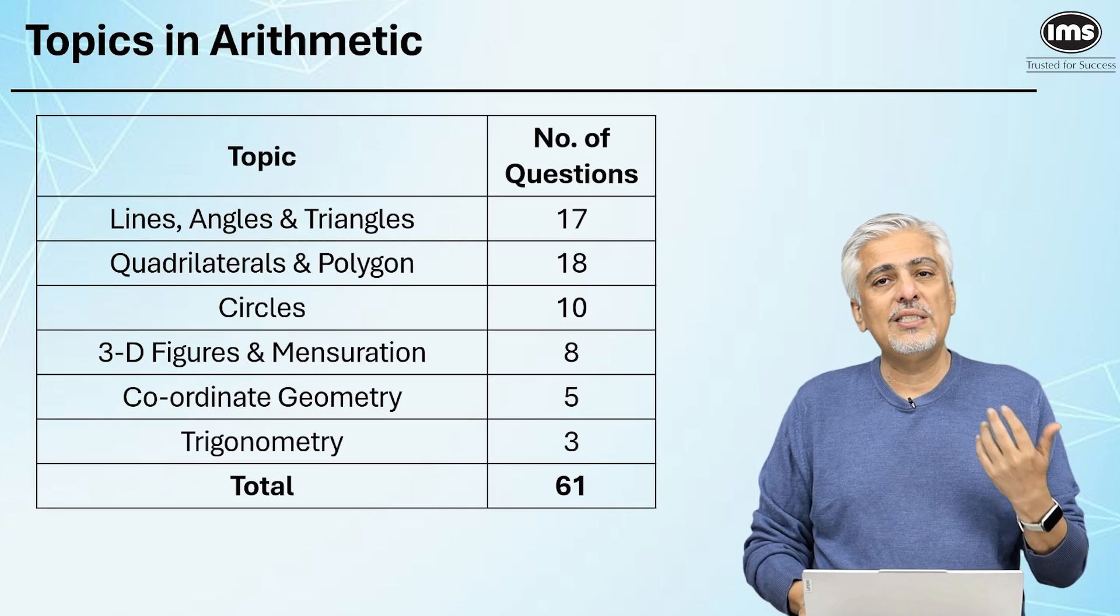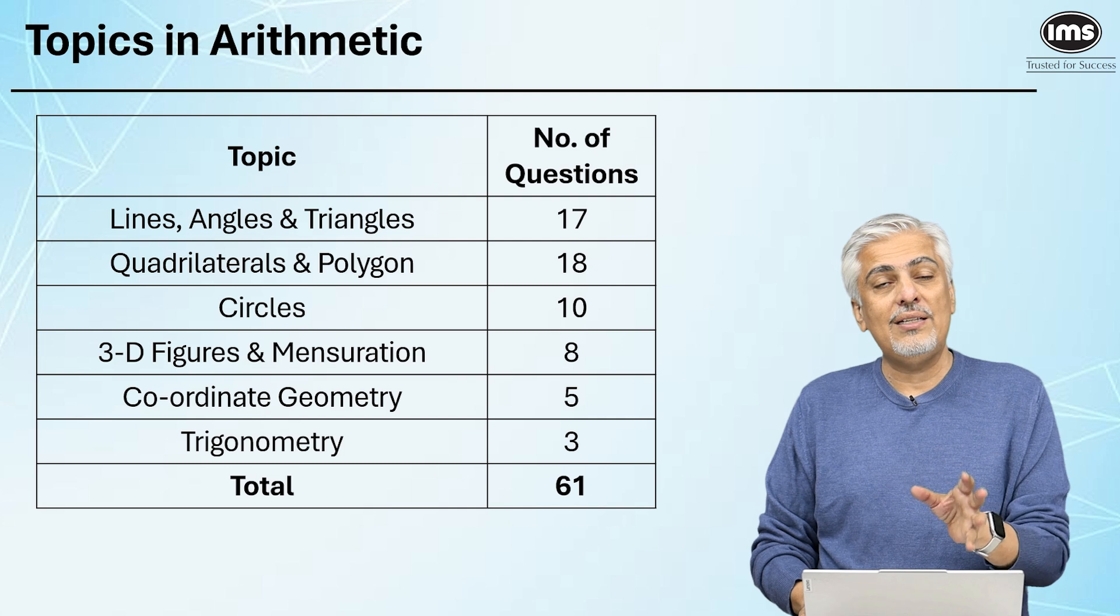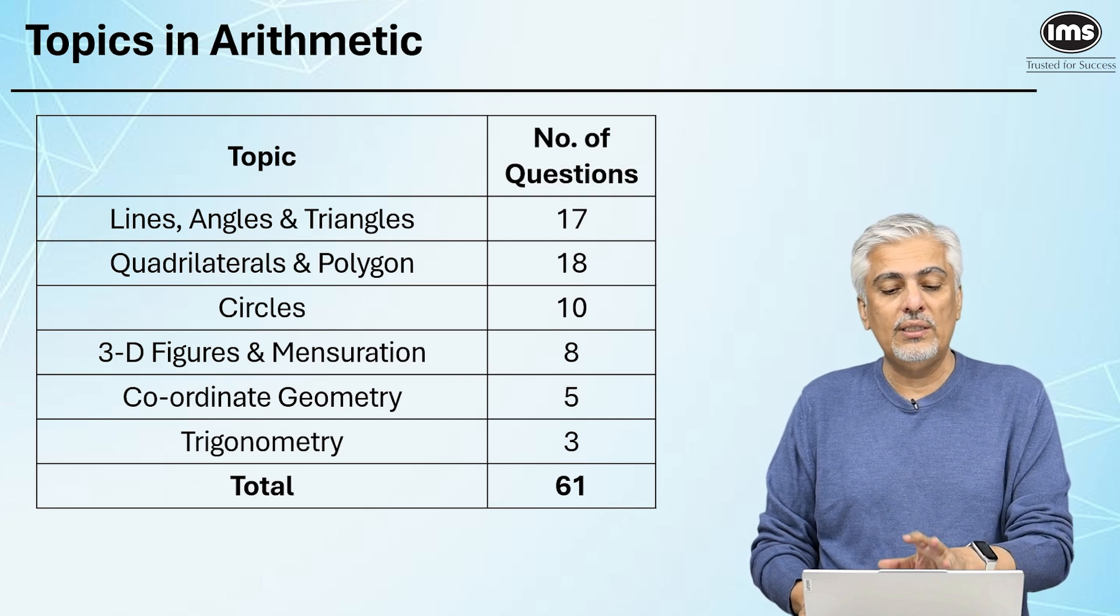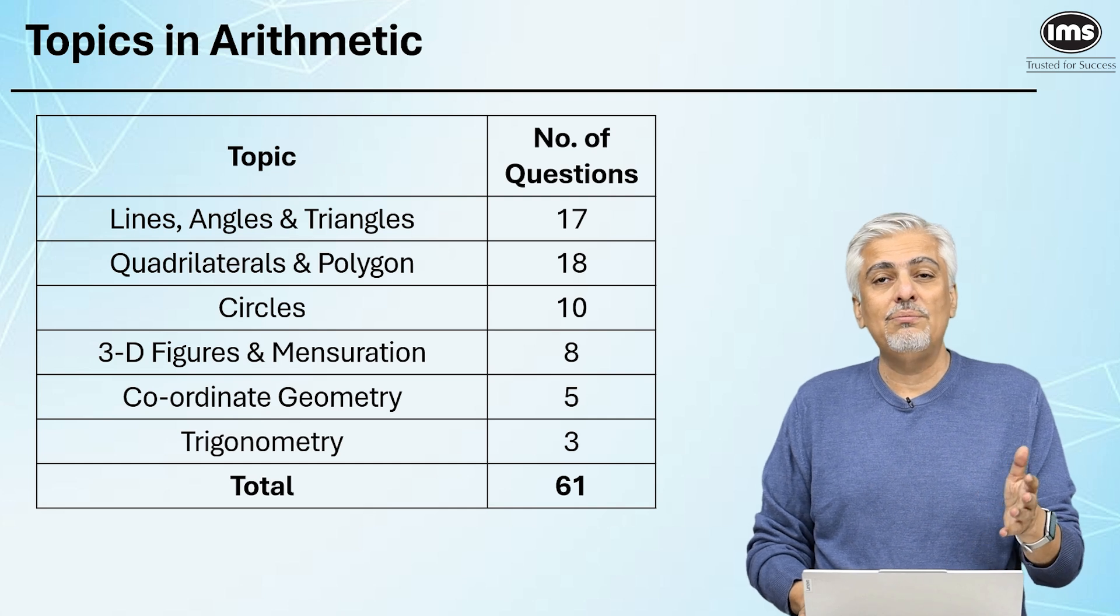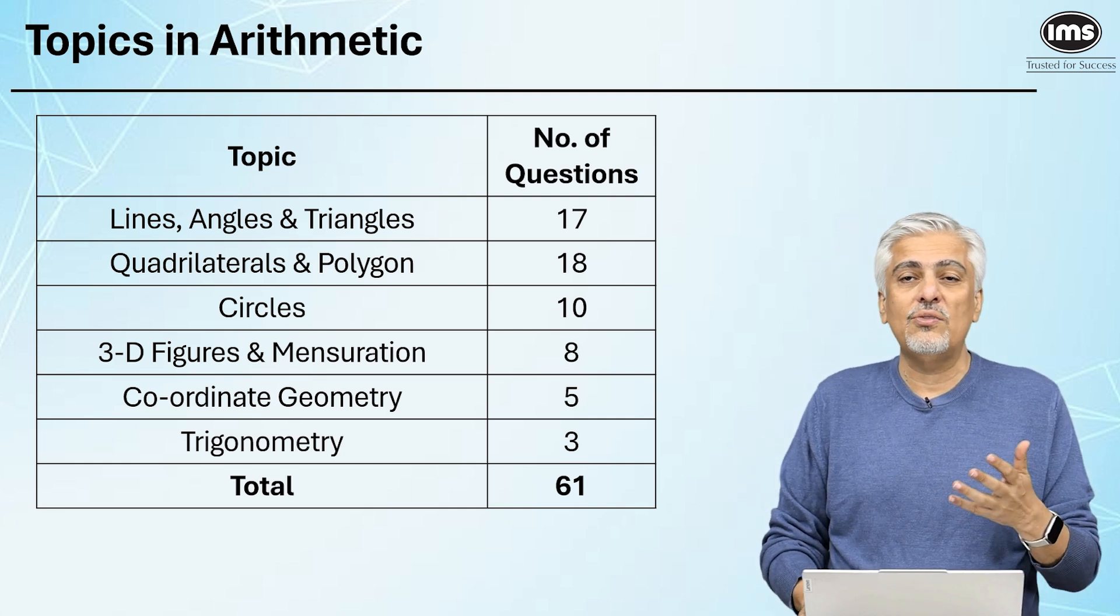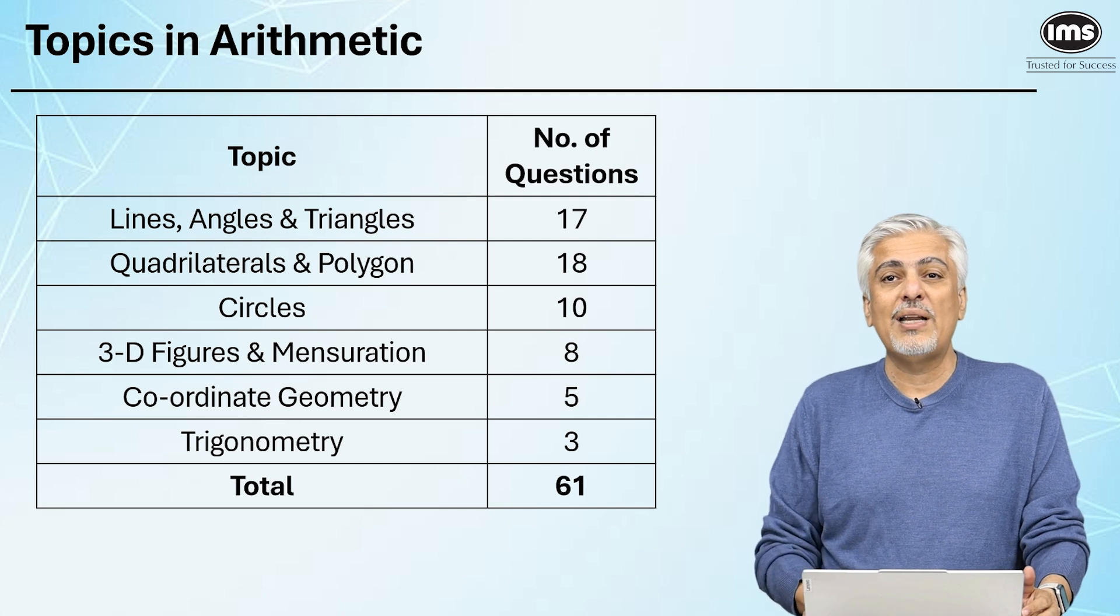So let's start with the topics. Obviously, there is lines, angles, and triangles. Lines and angles are the basic part. Triangle is the most important part over here. It has around 17 questions. When I say there are 17 questions, I have not done the break-up, but if I just had to take a chance, I would say out of these 17, maybe 14 would be out of triangles, and a couple would be from lines and angles.